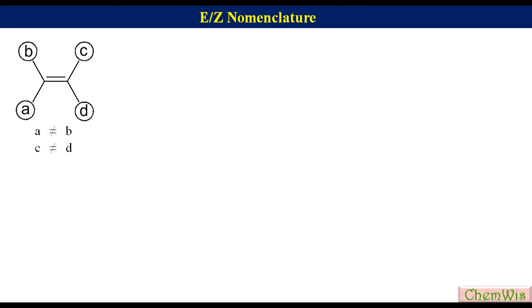For the determination of E/Z configuration of an alkene, we first determine the priority of groups attached to each alkenic carbon and label them as 1 and 2, where 1 is for higher priority group and 2 is for lower priority group.